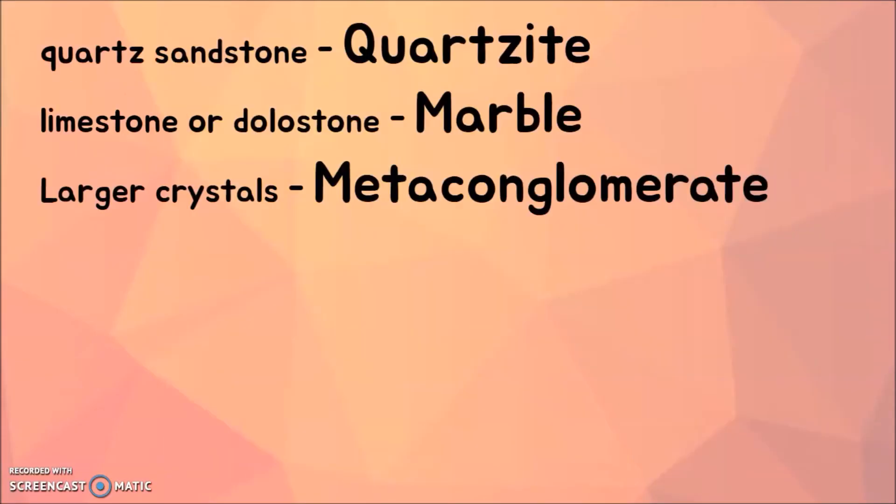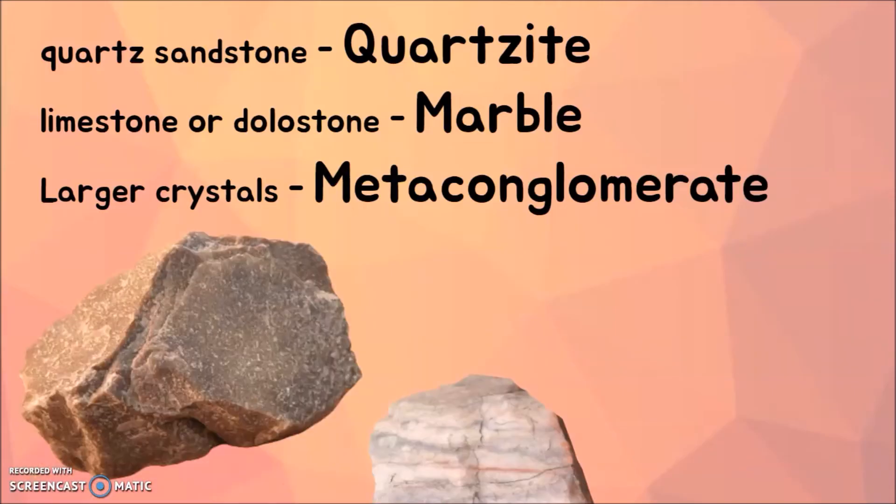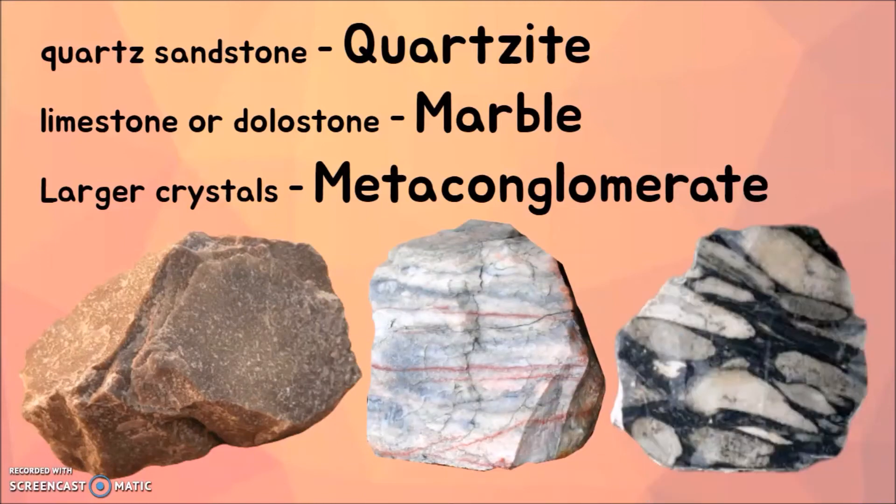Other metamorphic rocks that don't have foliation, but can be formed by both regional and contact metamorphism, are quartzite, marble, and metaconglomerate.